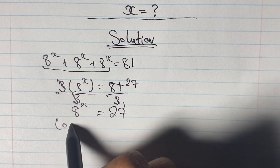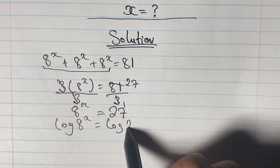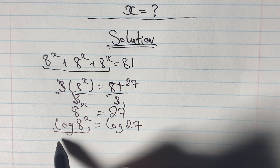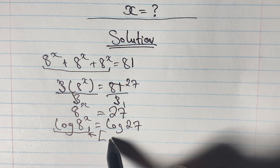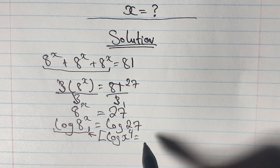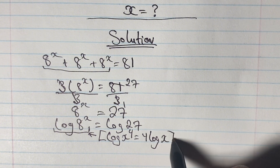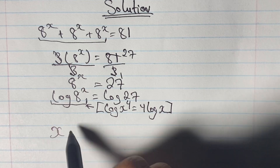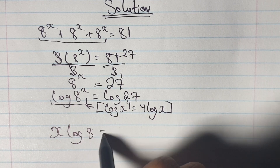Now we can apply our logs, so we have log of 8 to the power of x is equal to log 27. We can simplify log of 8 to the power of x using our logarithm rule where log x to the power of y is equal to y log x. So that means we would have x log 8 is equal to log 27.